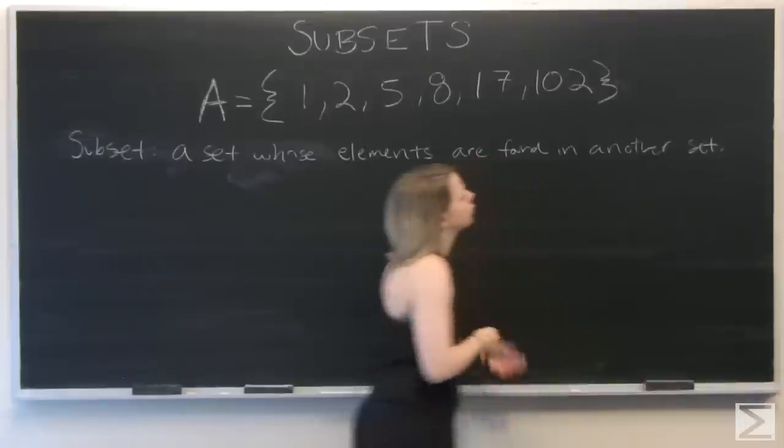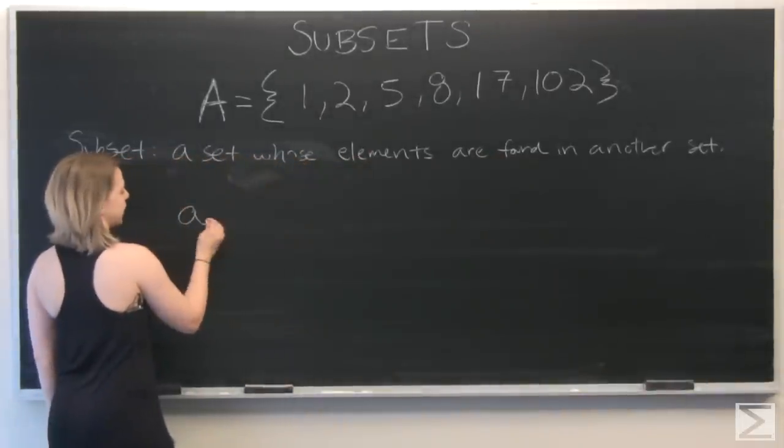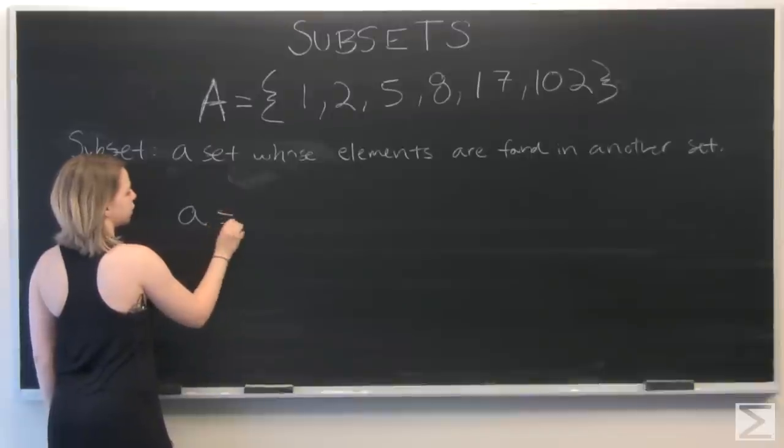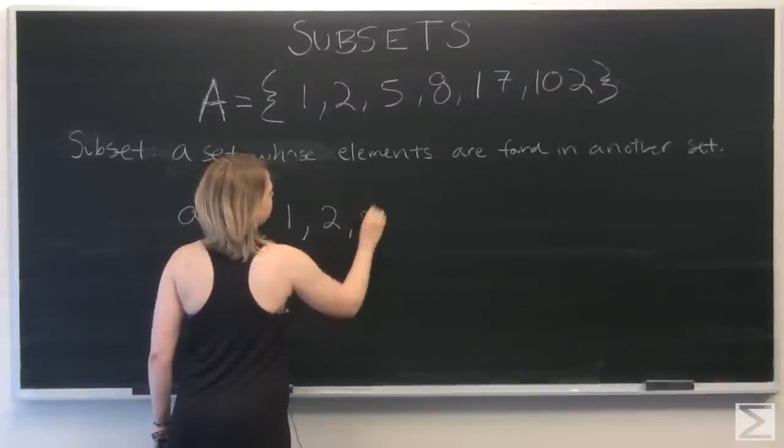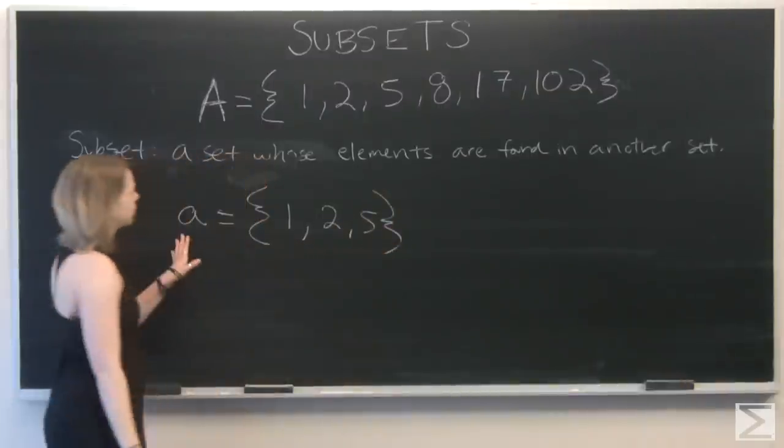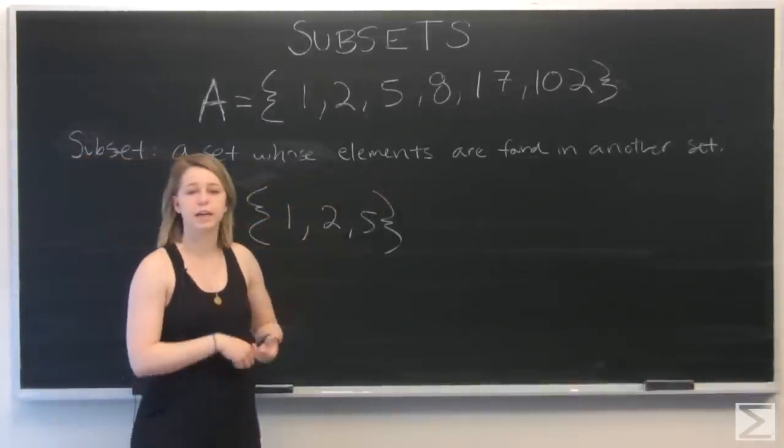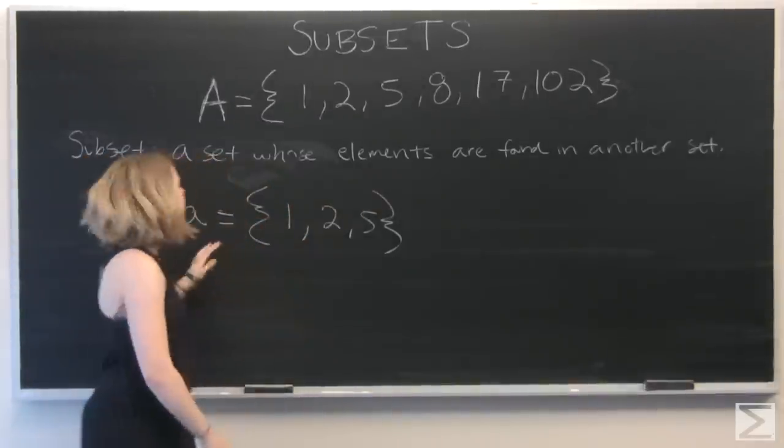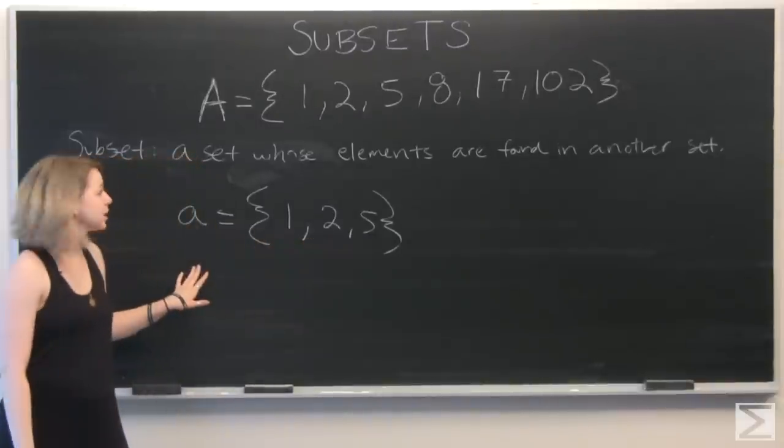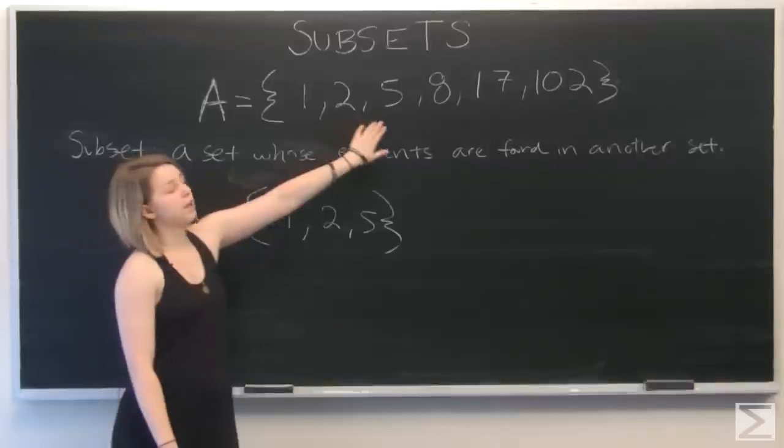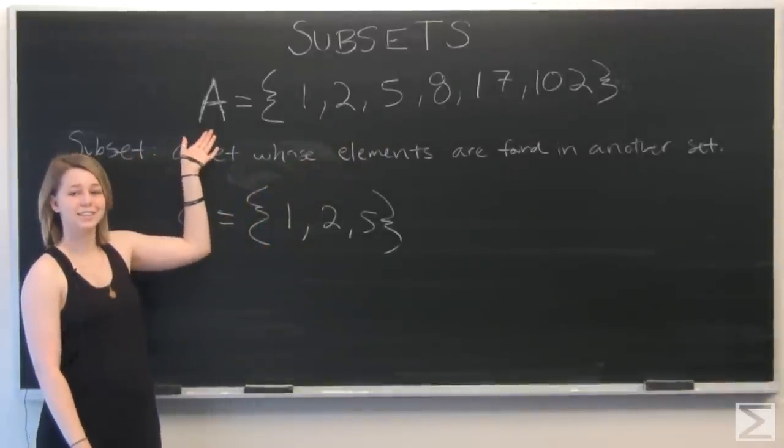For example, let's look at a subset lowercase a. We'll set this equal to 1, 2, 5. Our definition is that the elements of a subset can be found in a different set. So we've got elements 1, 2, and 5 in set lowercase a, and each of these can be found in our defined capital A set.